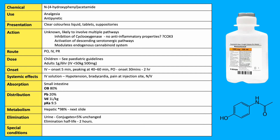It has an oral bioavailability of 80%, a volume of distribution of 1 litre per kilogram, low protein binding at 20%, and a pKa of 9.5. It undergoes extensive hepatic metabolism with elimination in the urine, mainly as conjugates, with 5% excreted unchanged and an elimination half-life of 2 hours.